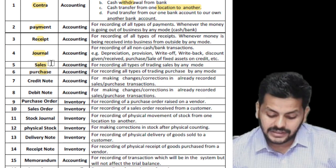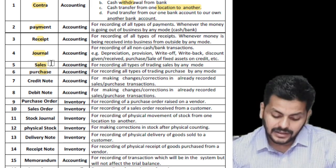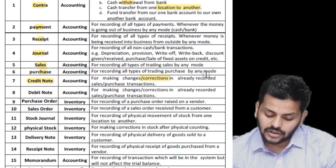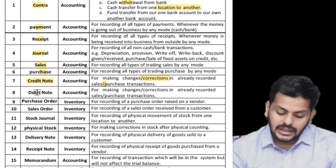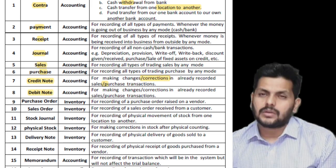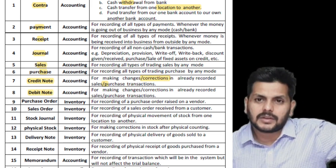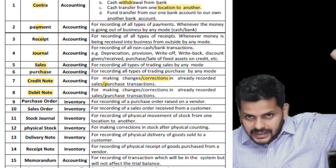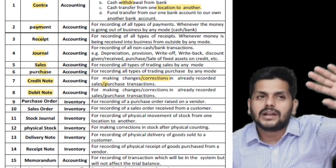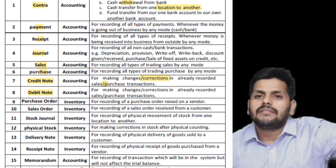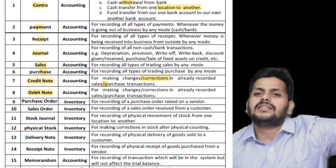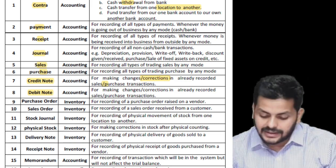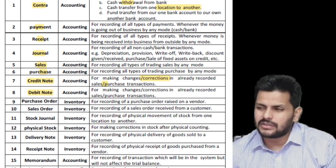Credit note is issued for making changes or corrections in already-recorded sales or purchase transactions. Credit note: if someone was debited earlier in sales, you are now crediting them and sending a credit note. Debit note is the opposite: in purchase returns, you raise a debit note against someone who was credited earlier. From accounting vouchers 1 to 8, these are all accounting-related vouchers you already know from passing journal entries. Moving to inventory-oriented vouchers: purchase order, sales order, stock journals, physical receipt of stock, and delivery note.